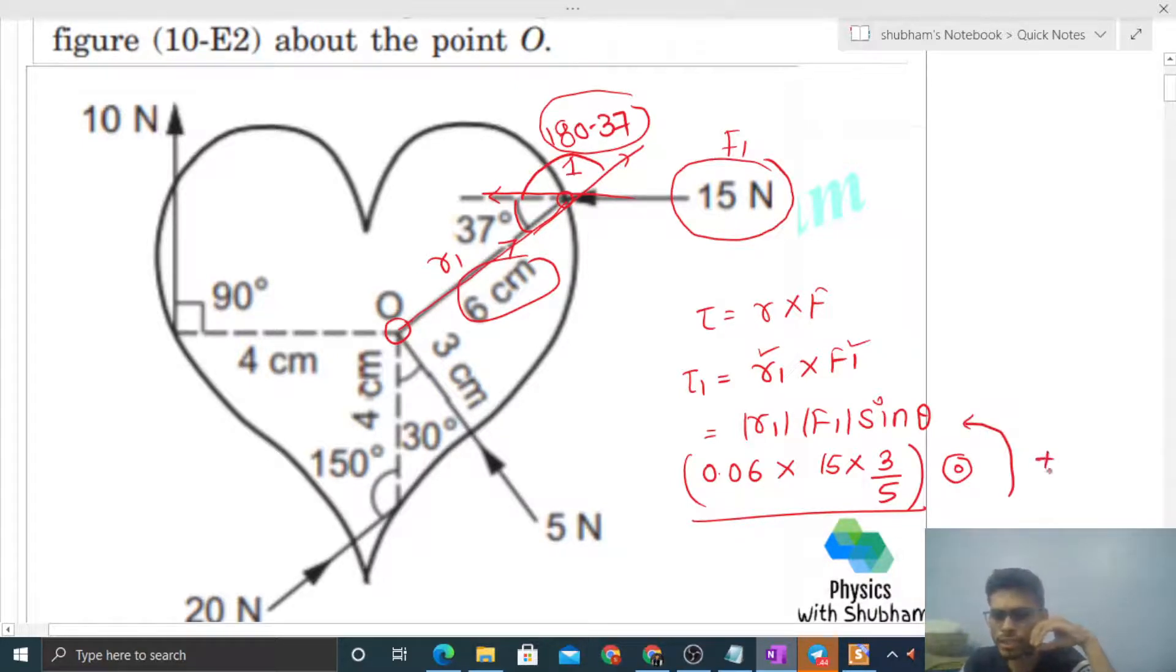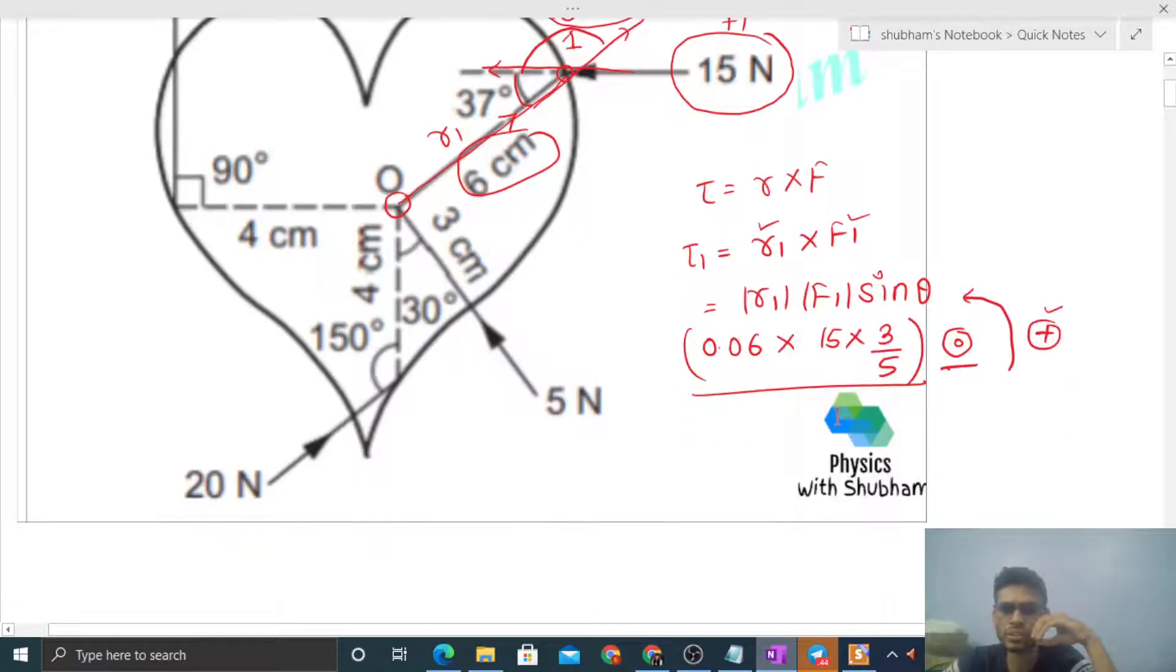This direction is perpendicular to this plane and coming out, or anticlockwise. And anticlockwise we take as positive, just by convention. You can define anticlockwise as negative if you want. Now the 5N force, that is my F2.